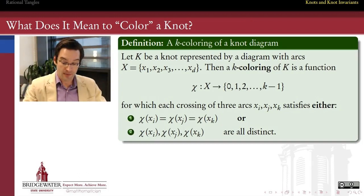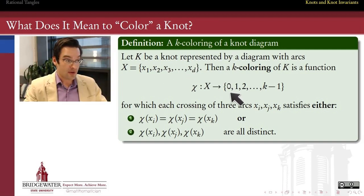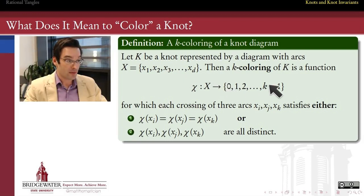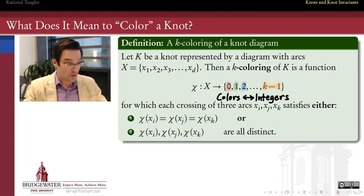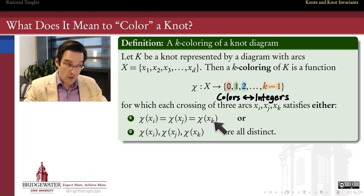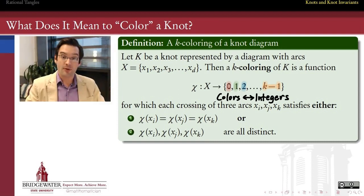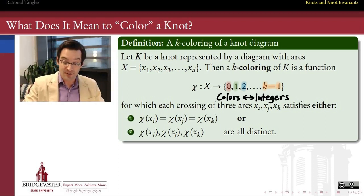A K-coloring of a knot diagram is a function from the set of arcs in that knot diagram into the integers from 0 up to K minus 1. That's just a fancy way of saying for each of the arcs in the diagram, we're going to assign it one of these numbers from 0 through K minus 1, so we have a total of K different colors. We require that at every crossing of the knot diagram, one of two things needs to be true: either the colors assigned to all three arcs that meet at that crossing are all the same, or all three are different.